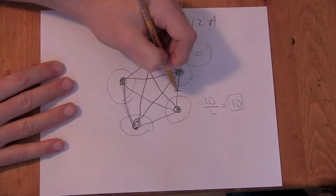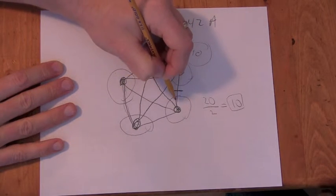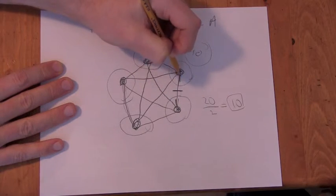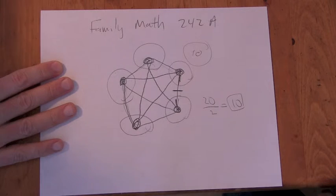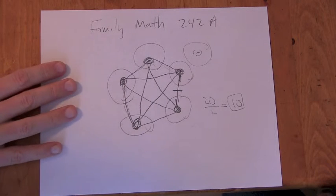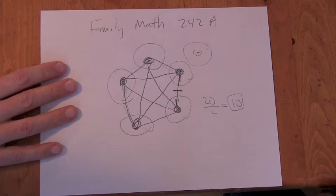But the problem is, like if I pick this one, I counted it coming out of this vertex and I counted the same one coming out of that vertex. So I counted each one exactly twice. So I double counted.